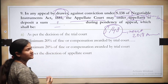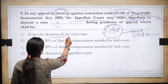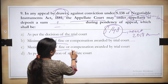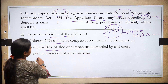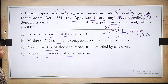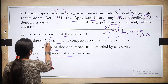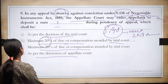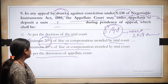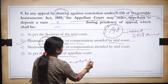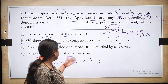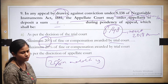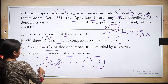What percentage must be deposited? Option 1: as per the decision of the trial court. Option 2: minimum 20% of fine or compensation awarded by the trial court. Option 3: maximum 20% of fine or compensation. Option 4: discretion of the appellate court. According to the 2018 amendment, the appellate court has power to order a minimum of 20% of whatever fine or compensation the trial court awarded to be deposited. Hence the answer is option B. This 20% is in addition to interim compensation under section 143A.